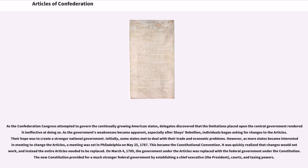Initially, some states met to deal with their trade and economic problems. However, as more states became interested in meeting to change the Articles, a meeting was set in Philadelphia on May 25, 1787. This became the Constitutional Convention. It was quickly realized that changes would not work, and instead the entire Articles needed to be replaced. On March 4, 1789, the government under the Articles was replaced with the federal government under the Constitution.